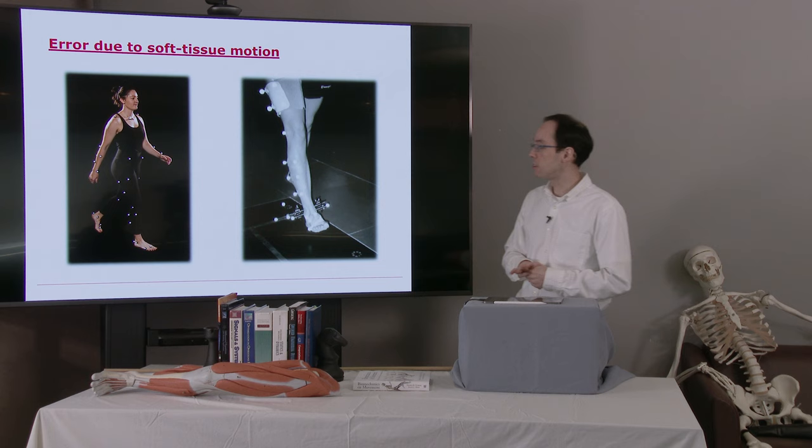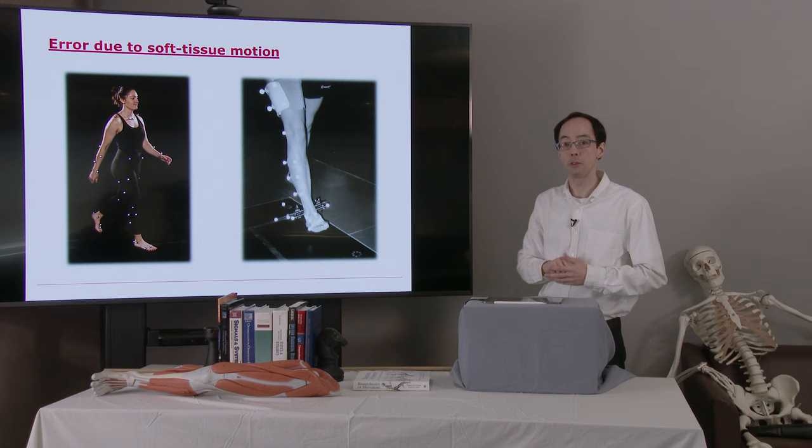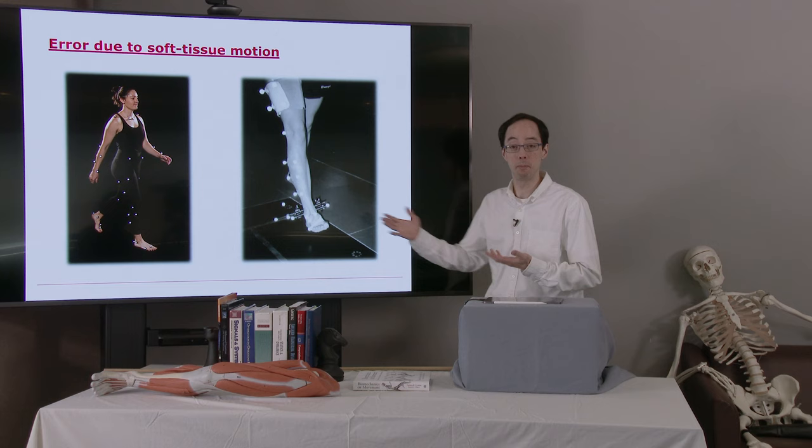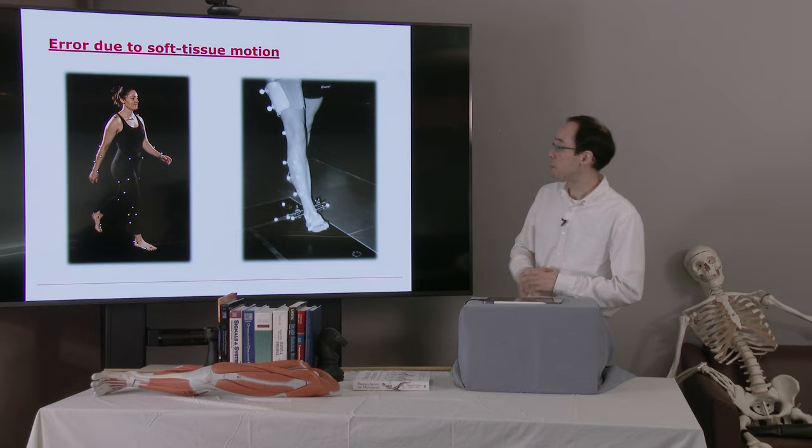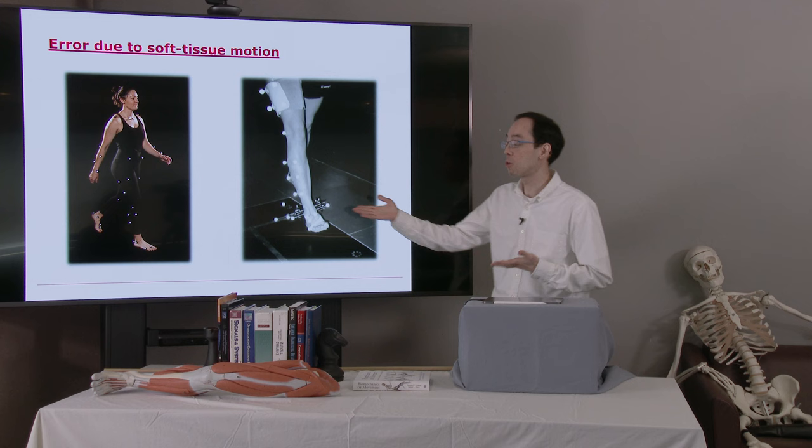One way of avoiding this is using what are called bone pins. These are stainless steel pins that are screwed into the bones, and we can track a marker that's put on the end of the pin. As you might imagine, this is not particularly comfortable. It's not going to be suitable for every experiment. Typically, we would only do this for students who score less than about 65% on the midterm, but it is a good way to get very high quality data.